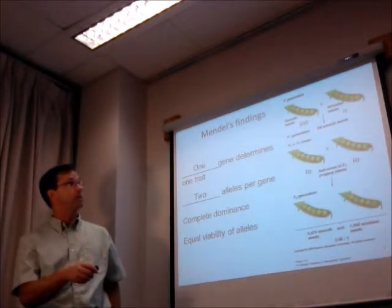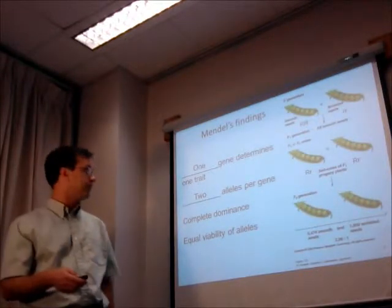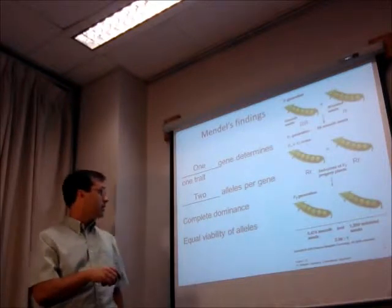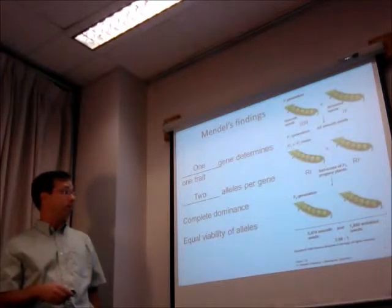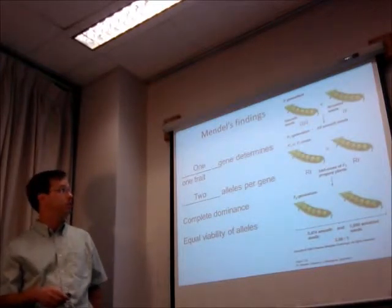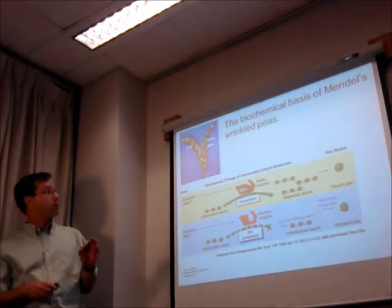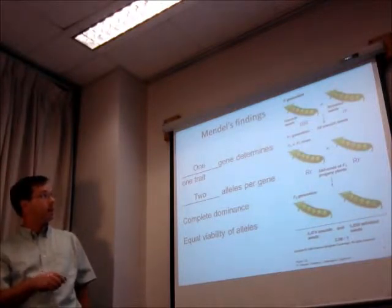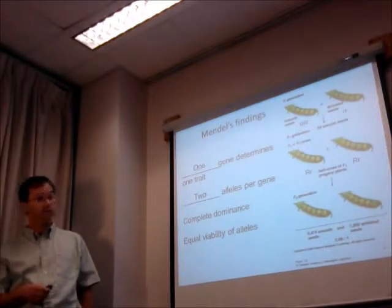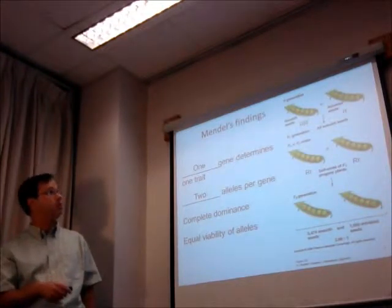For example, in the crosses where he was crossing smooth seeds with wrinkled seeds, the smooth seed allele was completely dominant over the wrinkled allele. And in addition to that, he also found equal viability of all alleles in these crosses. So none of the alleles affected viability. And what we'll talk about today actually is a number of different variations on this theme where you see cases where each of these four items do not hold true.